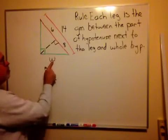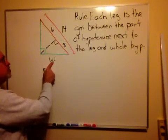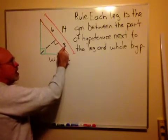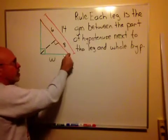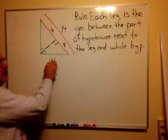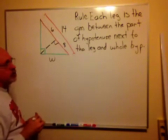The rule says that W is the geometric mean between the part of the hypotenuse next to that leg. Well, next to this leg of length W is this guy of length 8. It's the part of the hypotenuse that's next to, or adjacent to, this leg. So W is the geometric mean between 8 and the whole hypotenuse, which is 14.